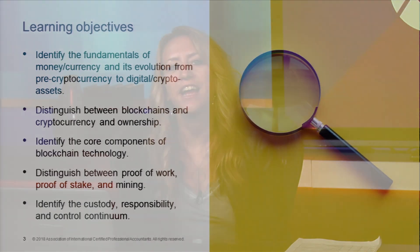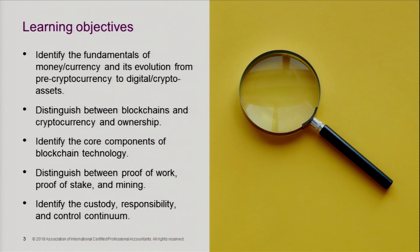Let's get right to it. This module is going to identify the fundamentals of money and currency and its evolution from pre-cryptocurrency to digital crypto assets. We're also going to distinguish between blockchains, cryptocurrency, and ownership. We're going to identify the core components of Bitcoin technology and blockchain technology, and distinguish between proof of work, proof of stake, and mining, and also identify the custody, responsibility, and control continuum.